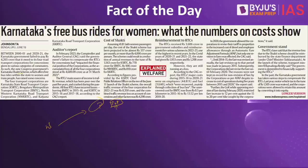When you look at the data — in February 2023, the Comptroller and Auditor General said the government's failure to compensate the RTCs for concessions had impacted the financial position of the corporations, as the accumulated loss of all four corporations stood at 4,689 crores. Looking at the present data, assuming 41.81 lakh passengers travel per day, the cost of the Shakti Scheme has been projected at about 337 crores per month or more than 4,000 crores per annum.